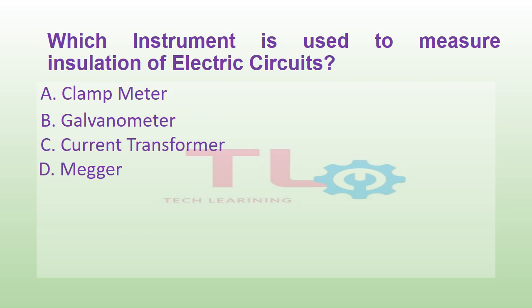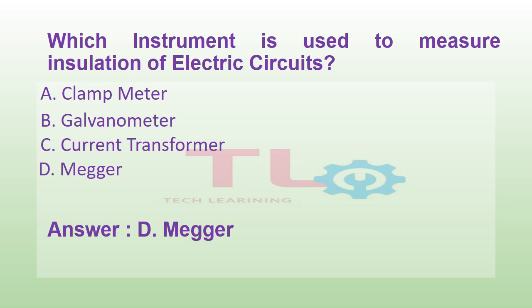Which instrument is used to measure insulation of electric circuits? Option A: clamp meter. Option B: galvanometer. Option C: current transformer. Or option D: megger. And the answer is option D, megger.